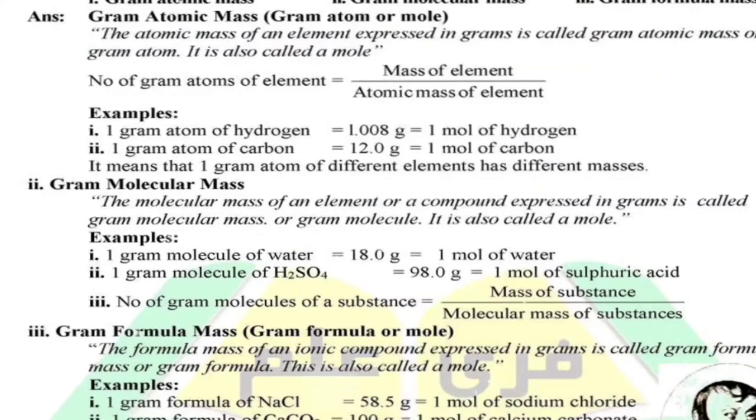Now, the main topic we will discuss in our lecture is gram atomic mass. What is gram atomic mass? The atomic mass of an element expressed in grams is called gram atomic mass or gram atom. It is also called a mole. For example, one gram atom of hydrogen is equal to 1.008 grams and one mole of hydrogen.